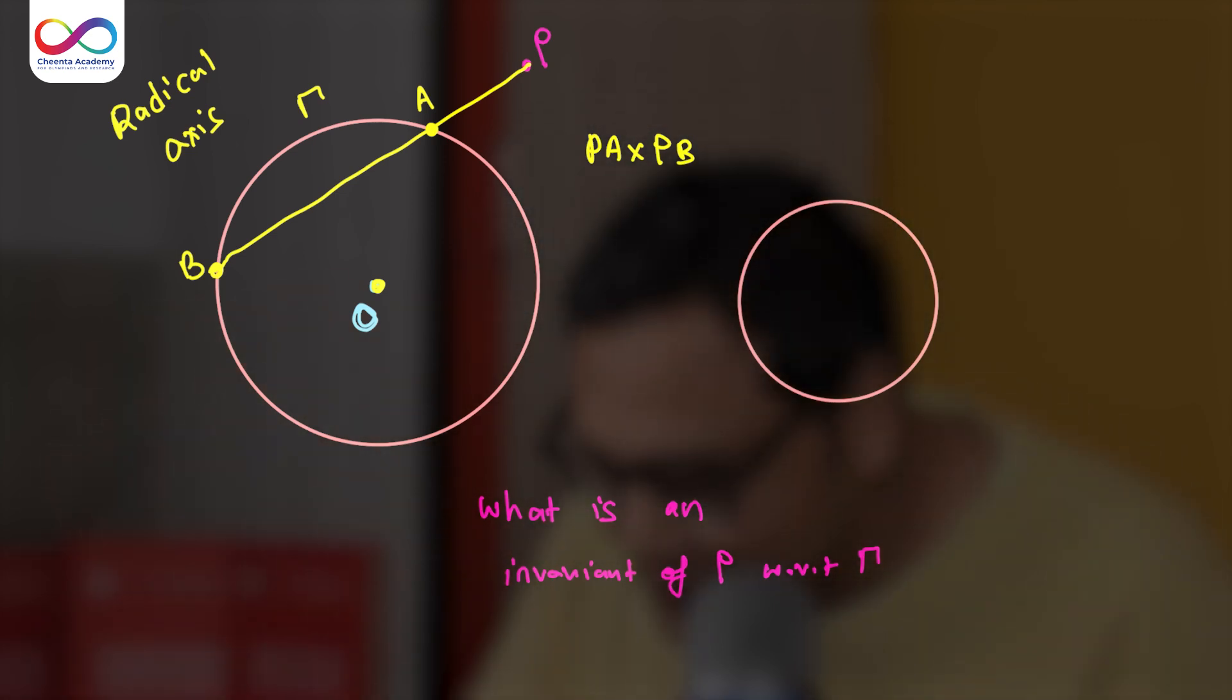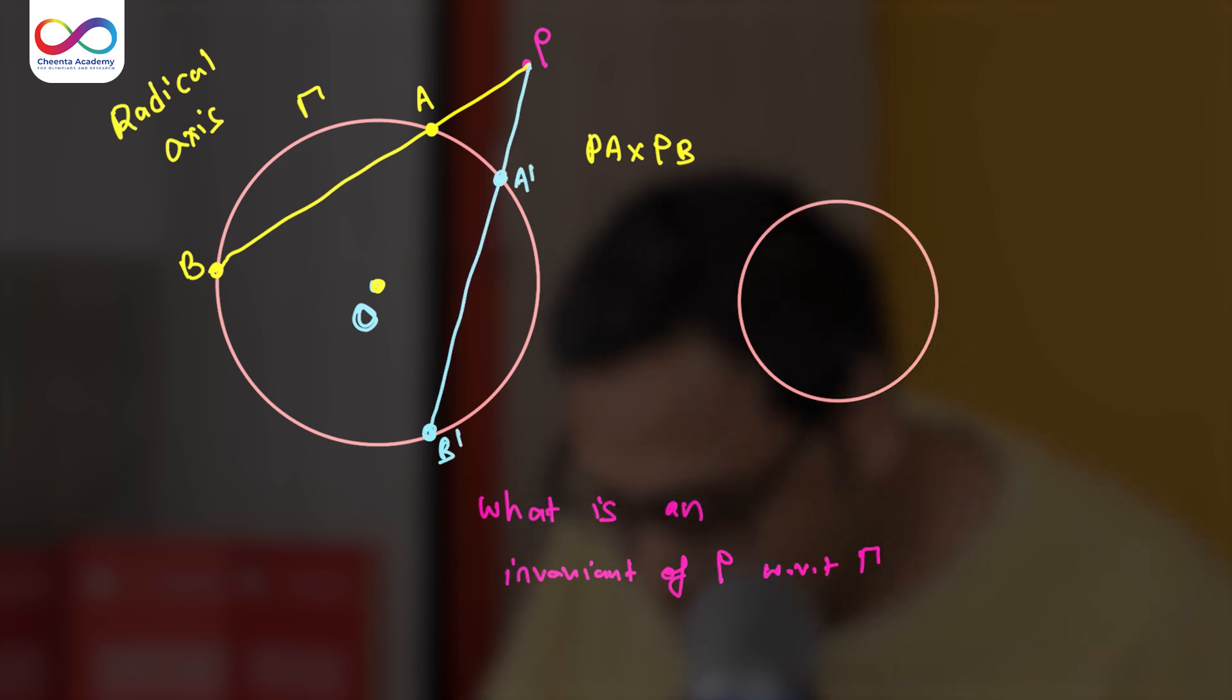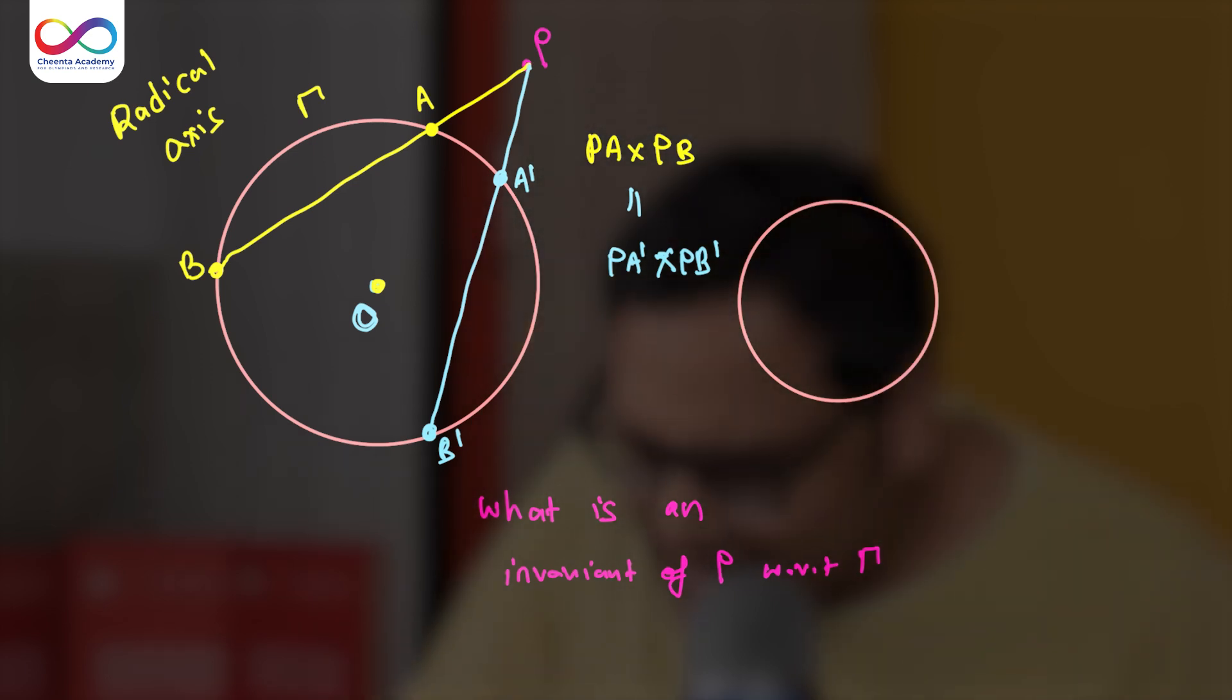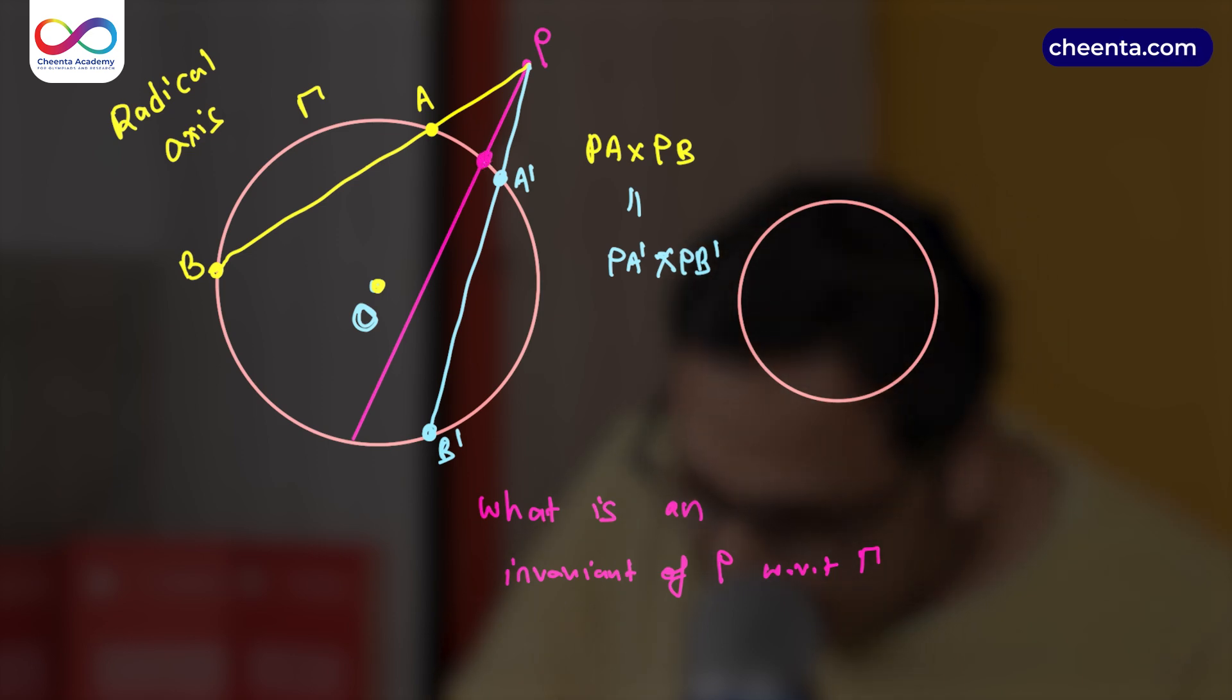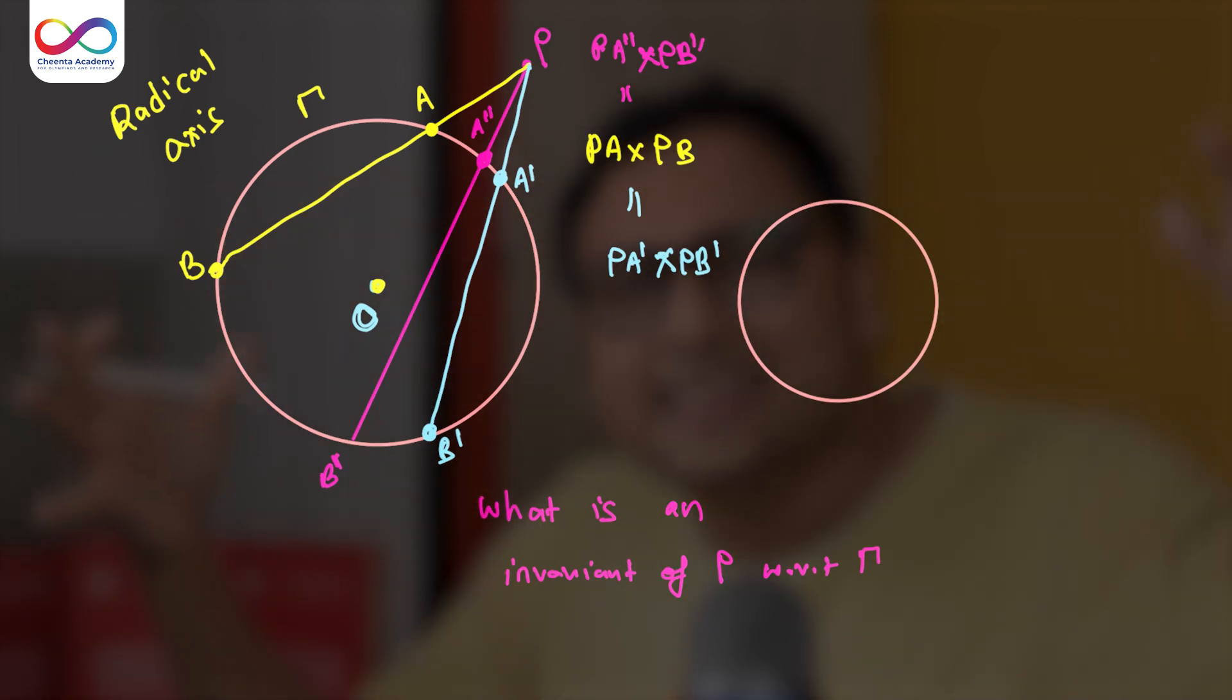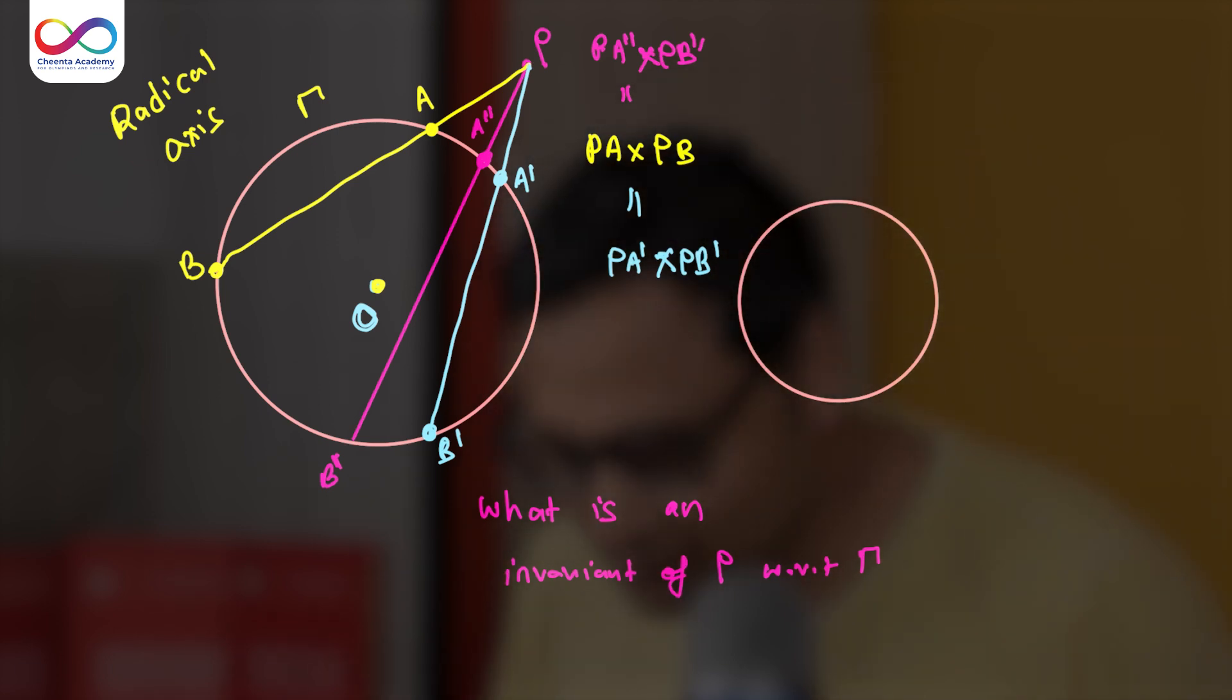What that means is if I take another secant, let's say PA'B', the product would be same. The value of the product PA' times PB' will be same as PA times PB. If I take some other secant like this, let's call it A''B'', then PA'' times PB'' will equal PA times PB. No matter which secant you draw, that's why we call it the invariant of the point P with respect to the circle gamma. It's awesome.